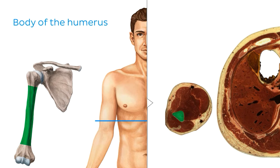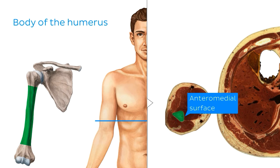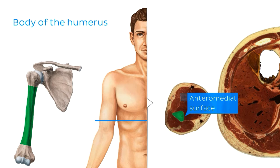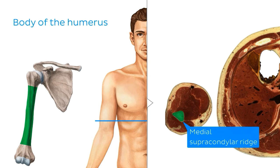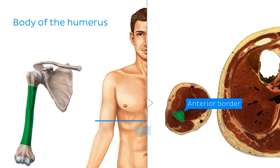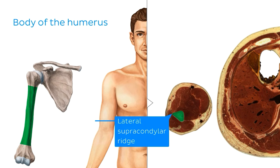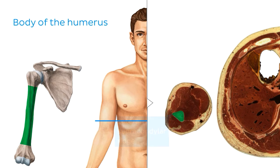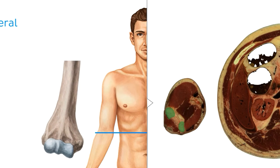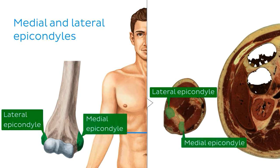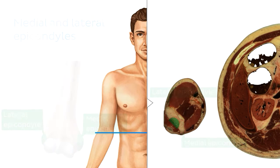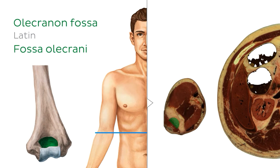The humerus now presents three well-defined structures: the posterior surface, the anteromedial surface, and the anterolateral surface, which are separated by the medial supracondylar ridge, the anterior border, and the lateral supracondylar ridge respectively. At the distal end of the humerus, the bone expands into medial and lateral epicondyles, separated posteriorly by the olecranon fossa.